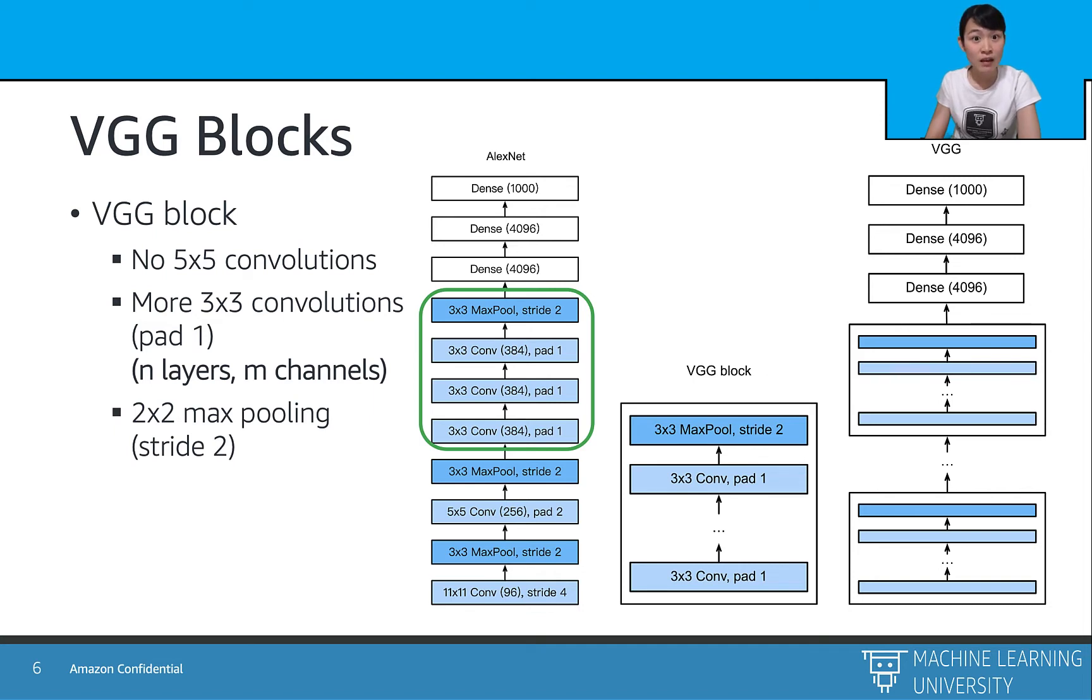And this is especially important in the deep structure. After 2 to 3 consecutive 3 by 3 convolutional layers, the VGG block uses a 2 by 2 max pooling layers to reduce the size of the feature map.